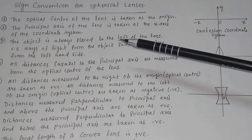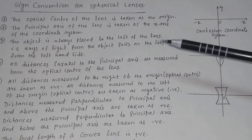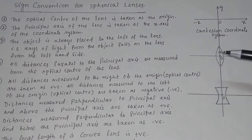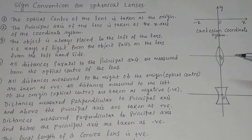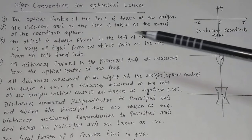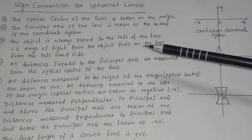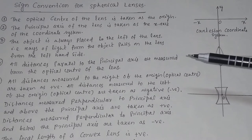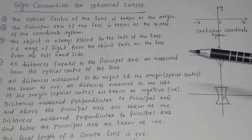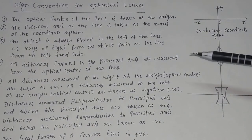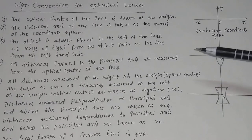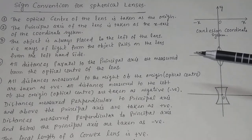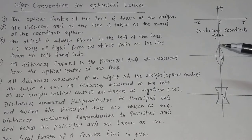The object is always placed to the left of the lens. This is the left side of the lens and this is the right side of the lens — the object will be placed on this side. The ray of light from the object falls on the lens from the left hand side, so the ray diagram will be drawn from the left hand side.